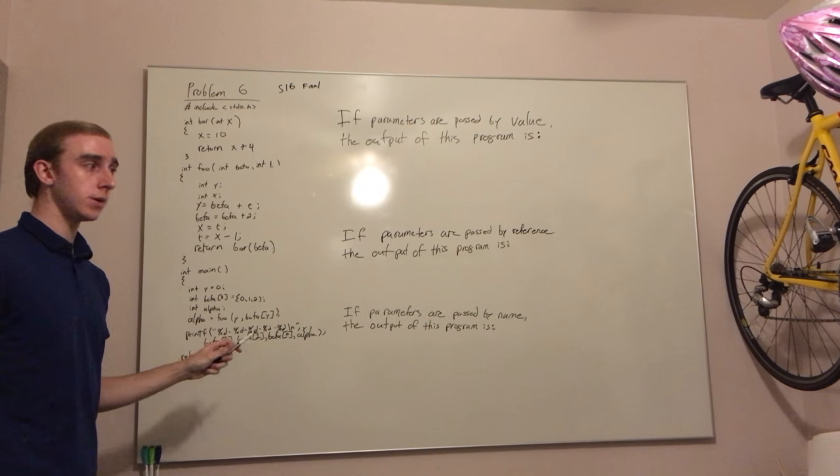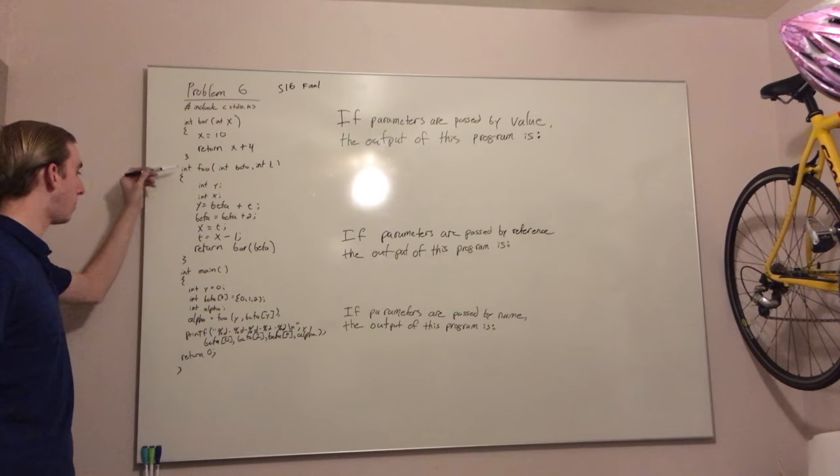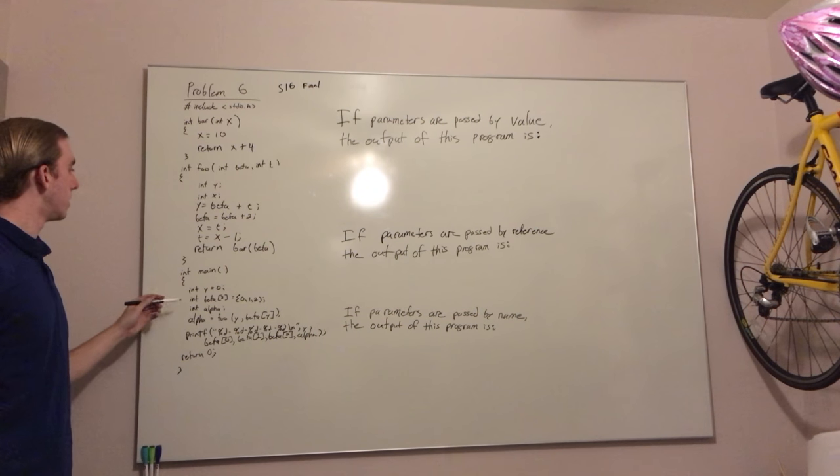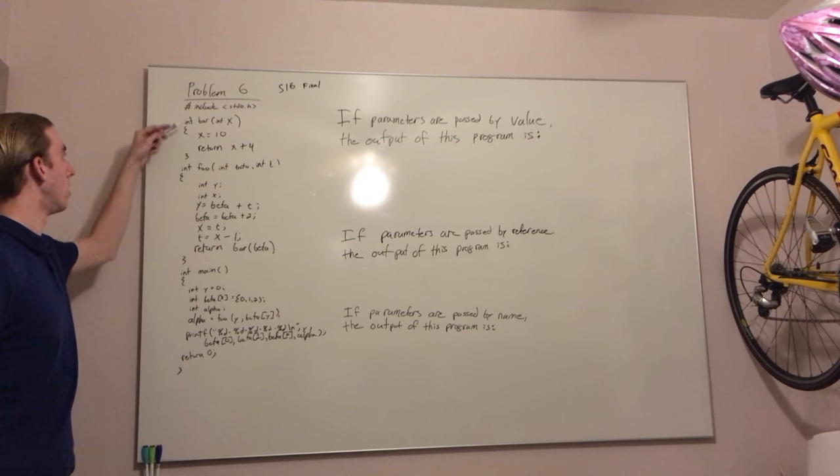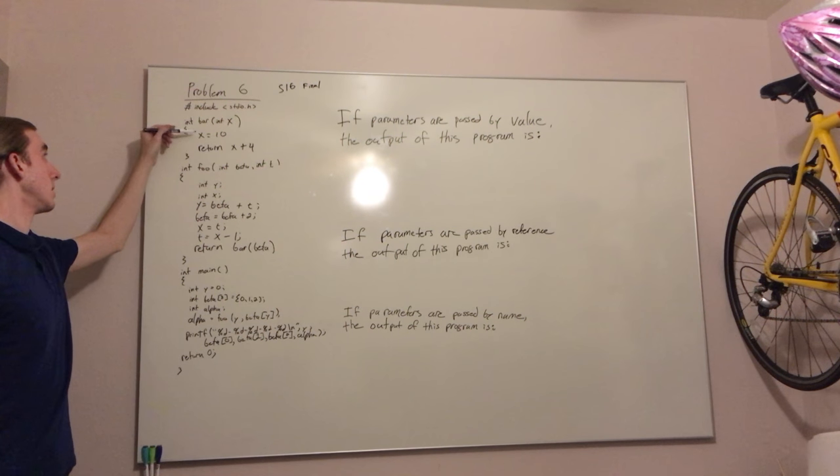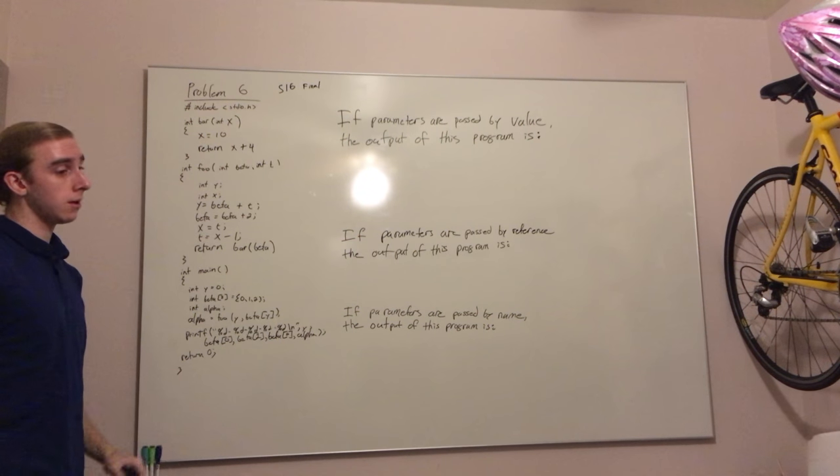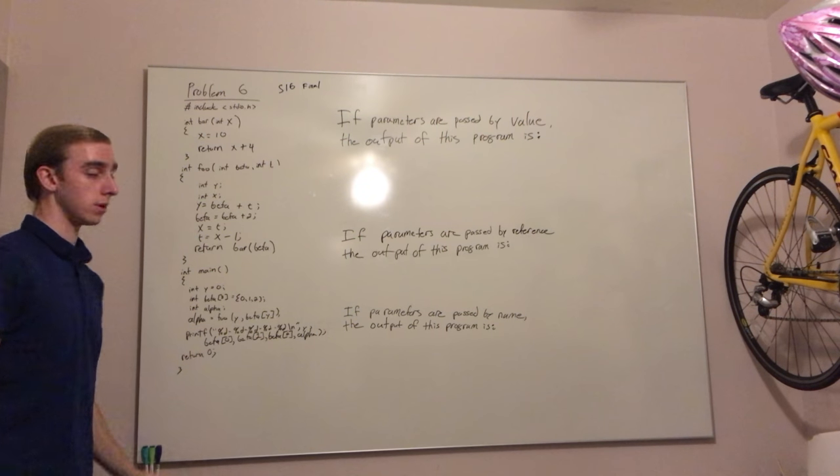The only significant feature is what is returned by foo and assigned to alpha. This is determined by bar of beta where x is just set to 10 and we return 14. So alpha is just 14.